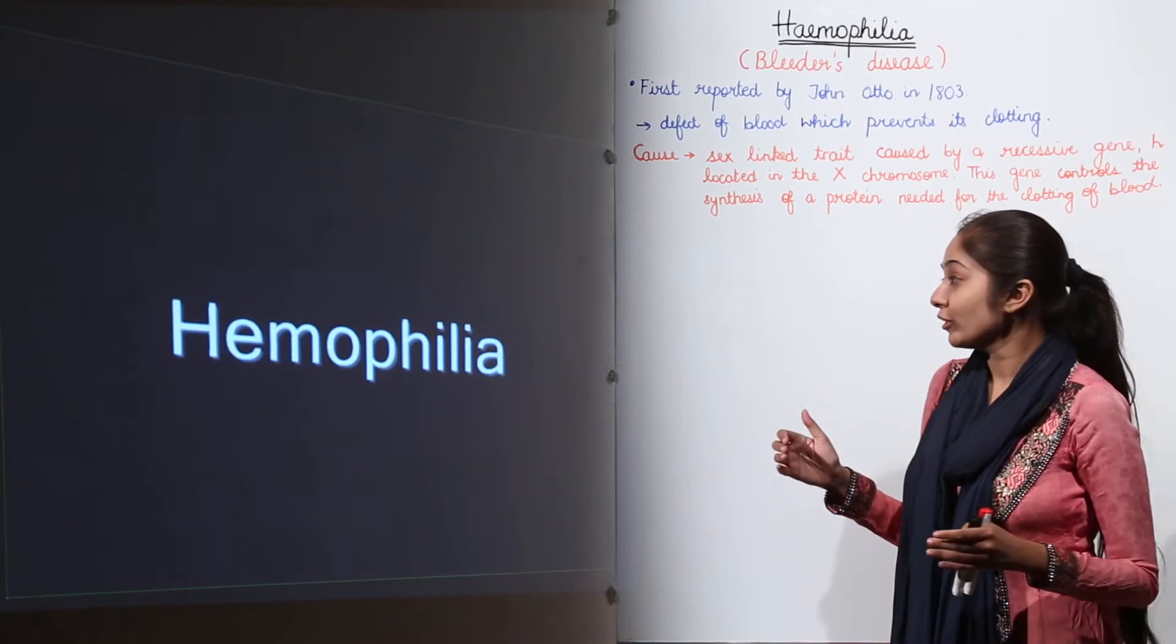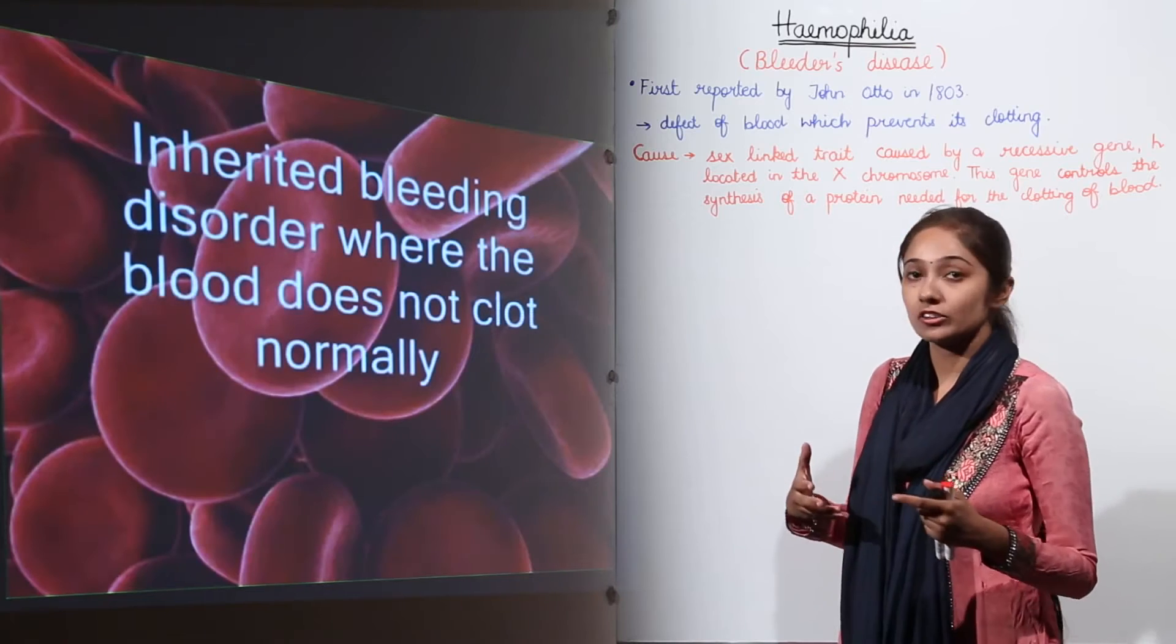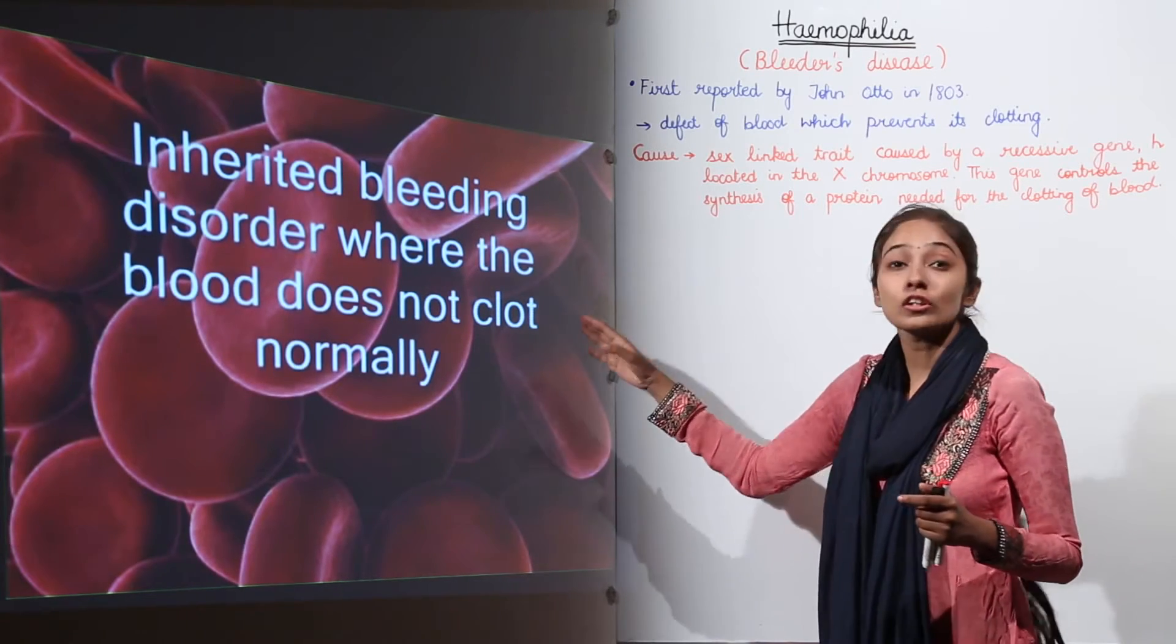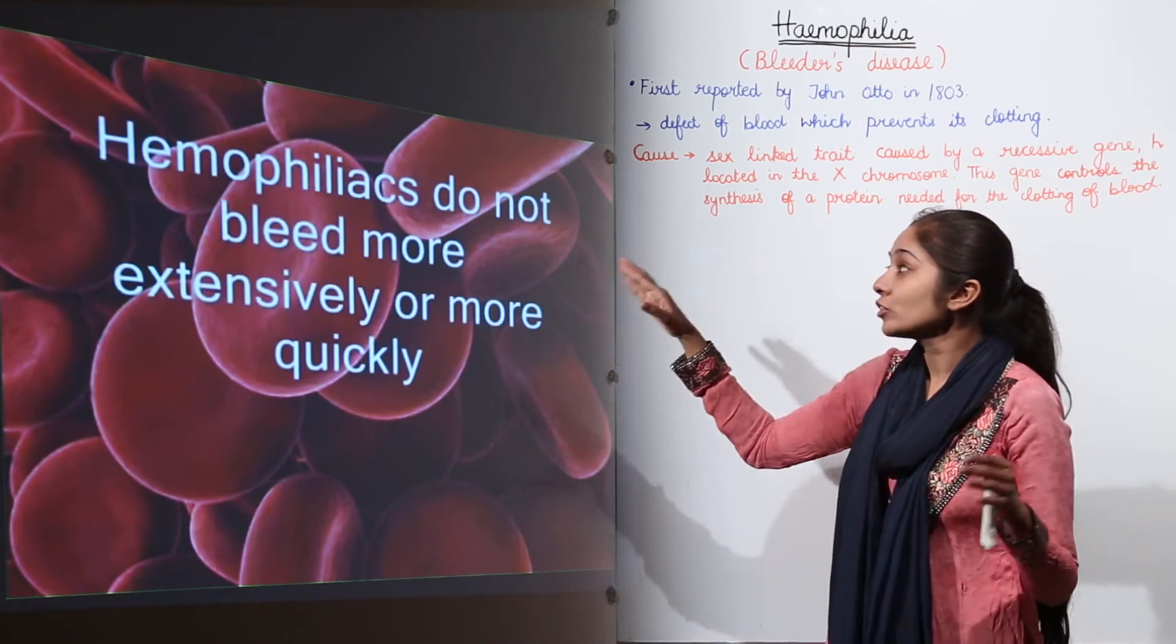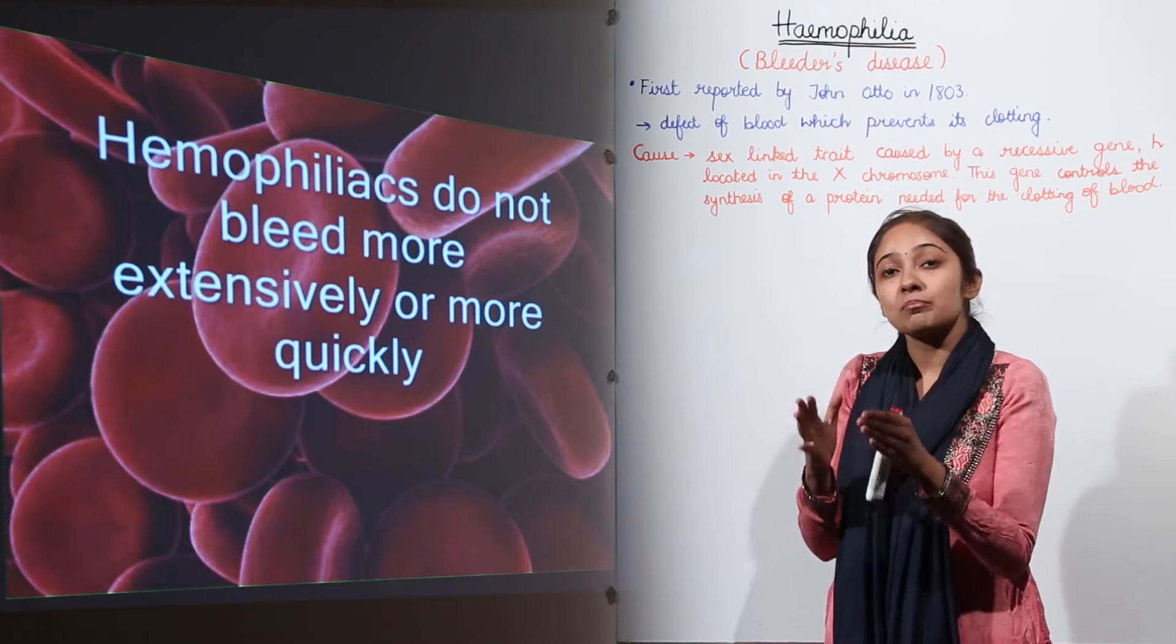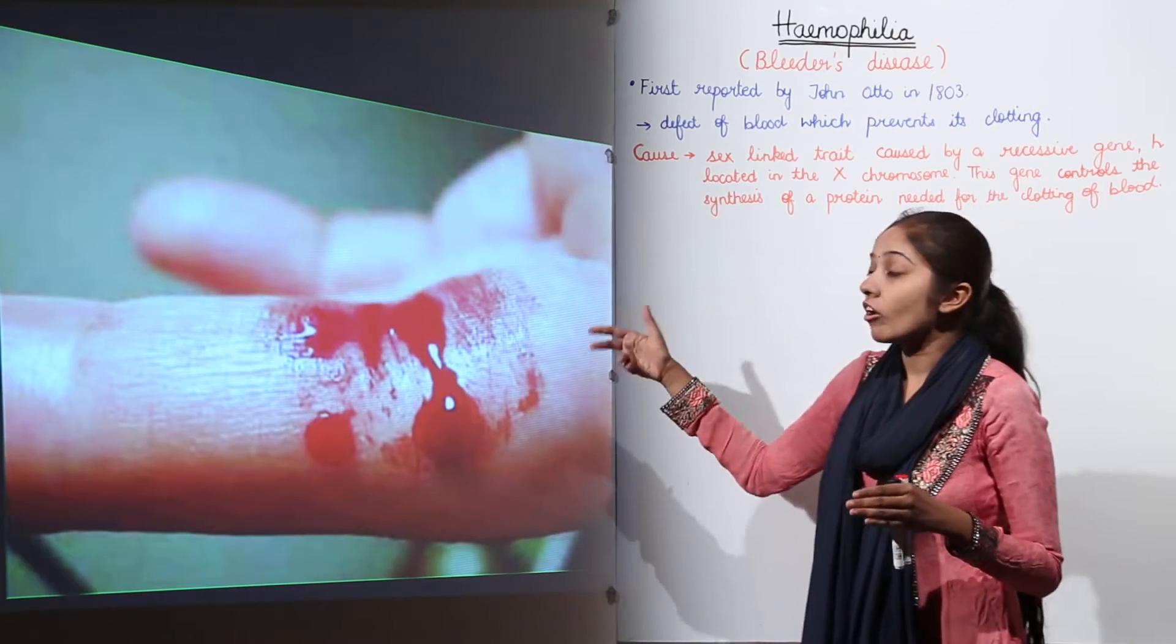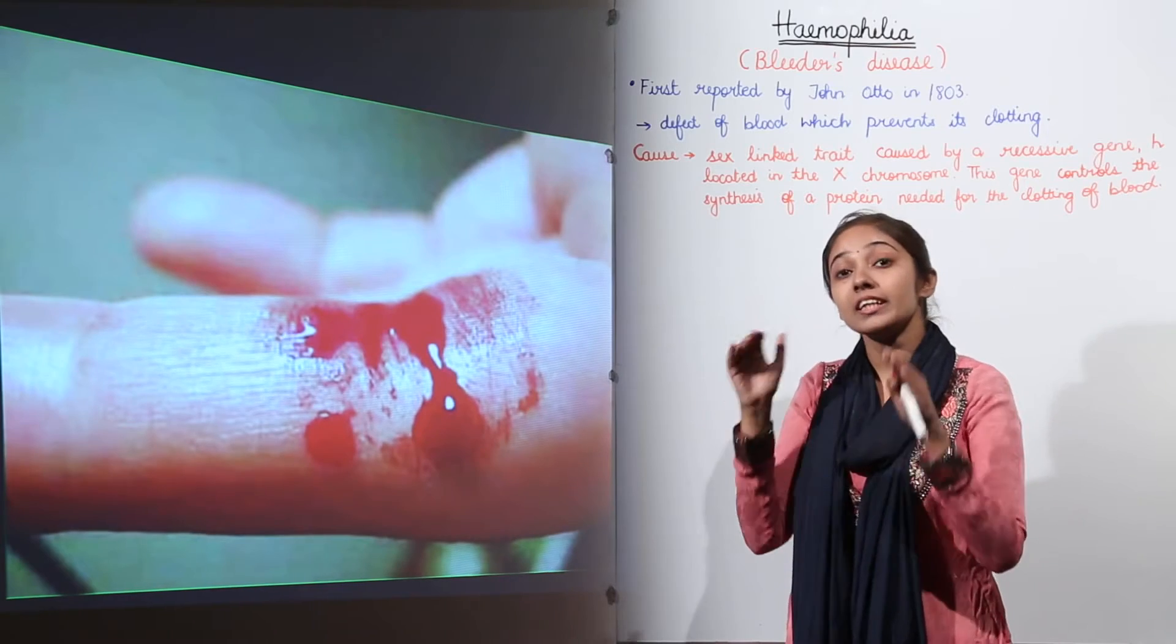Now let's have an overview of Haemophilia, this genetic disorder, the Mendelian disorder. It is an inherited bleeding disorder where the blood does not clot normally. It means that Haemophiliacs actually do not bleed more extensively or more quickly, but actually they bleed for a longer time. So they bleed for a longer time and this bleeding can be external also and it can be internal also.